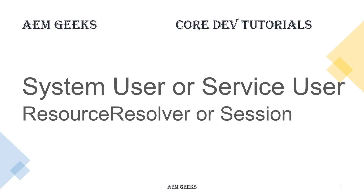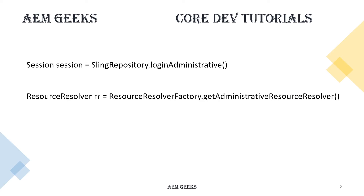For example, if I have a resource and I want to update it using code — say, add one particular property — that task will be performed by a service user mapped to my bundle. By the end of this tutorial you will understand this. To understand the need for system or service users, you have to go back to AEM 6.0, when you could update any content or resource using code.